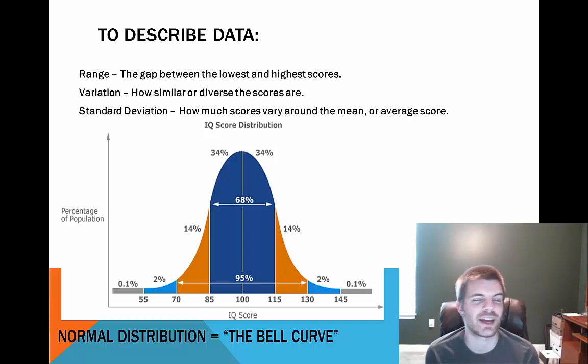You don't know in that 11th game, are they going to have a five point game or are they going to have a 35 point game. So one of the ways we look to try to control some of this data and measure it better is standard deviation. And this means how much scores vary around the mean or the average score. A good example of this is just referencing what is called the bell curve or the normal distribution. You can look at this picture here.